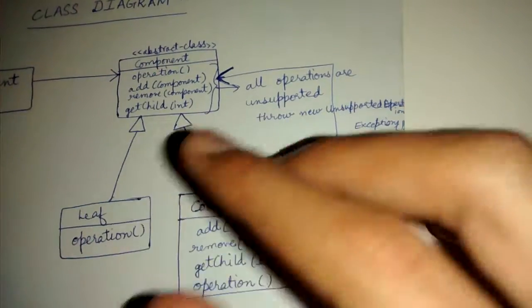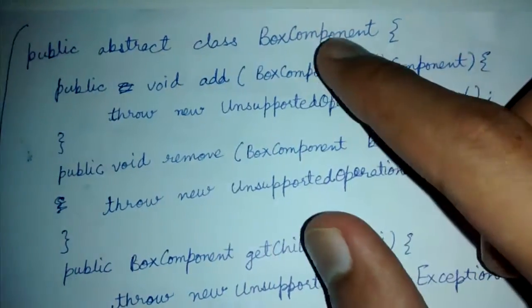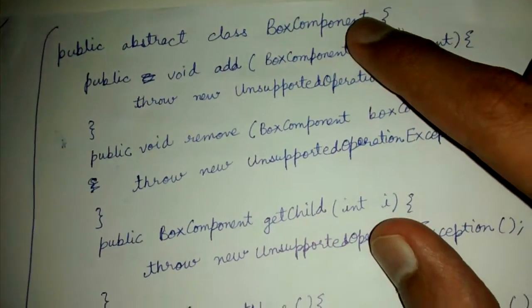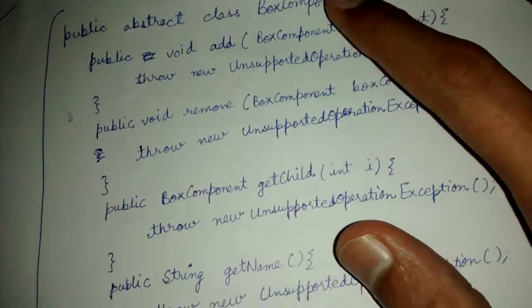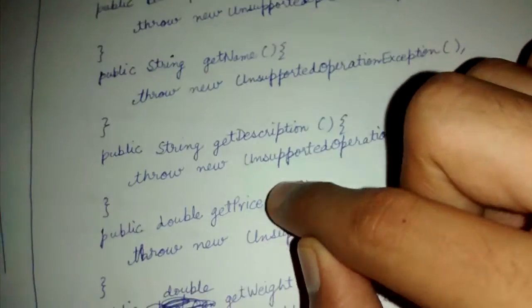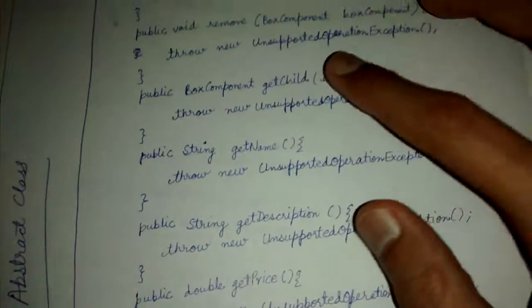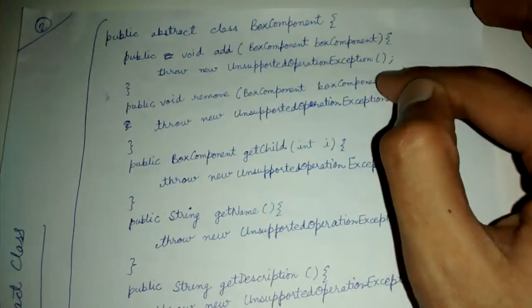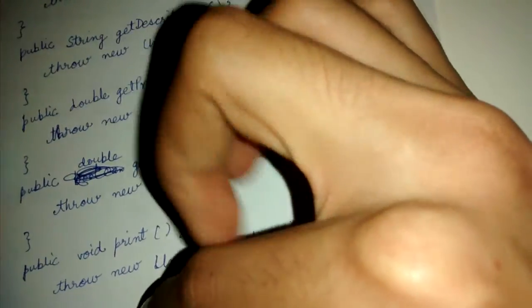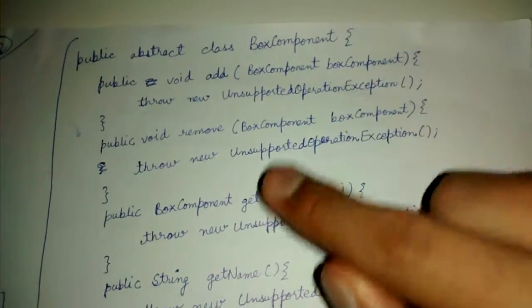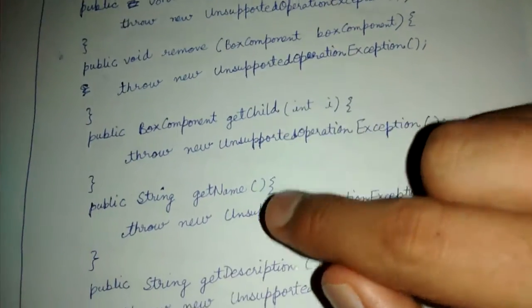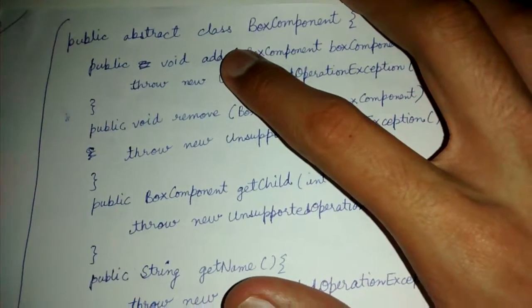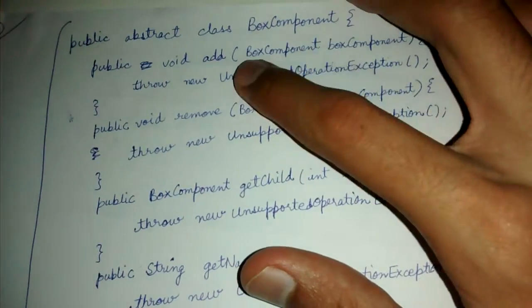Let's look at the code. This is the BoxComponent, which is the abstract class from which both BoxLeaf and BoxComposite will inherit. It has add, remove, get child, get name, get description, get price, get weight, and print methods — each with a default implementation that throws an UnsupportedOperationException. If a child leaf or composite supports an operation like add, they define their own implementation; leaf will just use the parent's implementation.